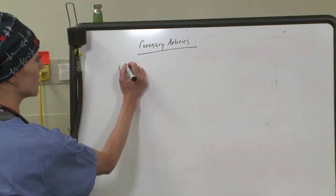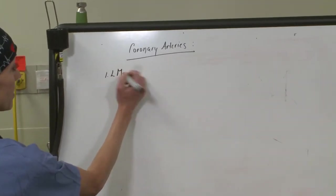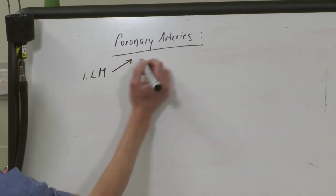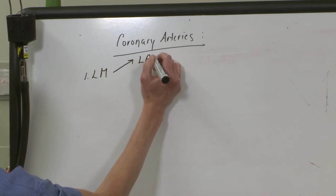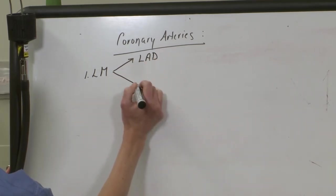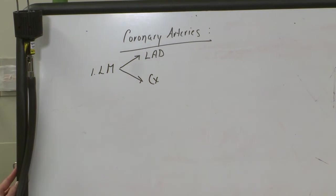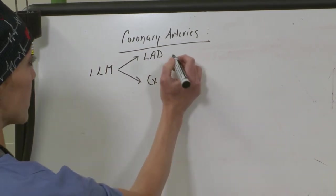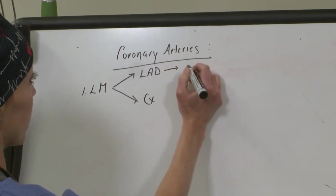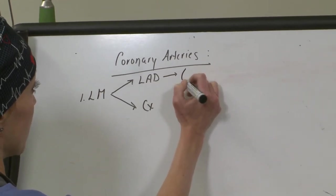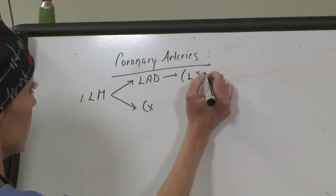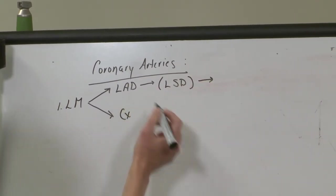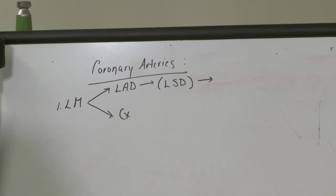First, you have your left main. Your left main divides into your LAD and your circumflex. Now you also need to know the branches off these. So a little mnemonic that I use to help people in terms of your LAD branches is to remember LSD. So off of your LAD comes your septals and your diags.